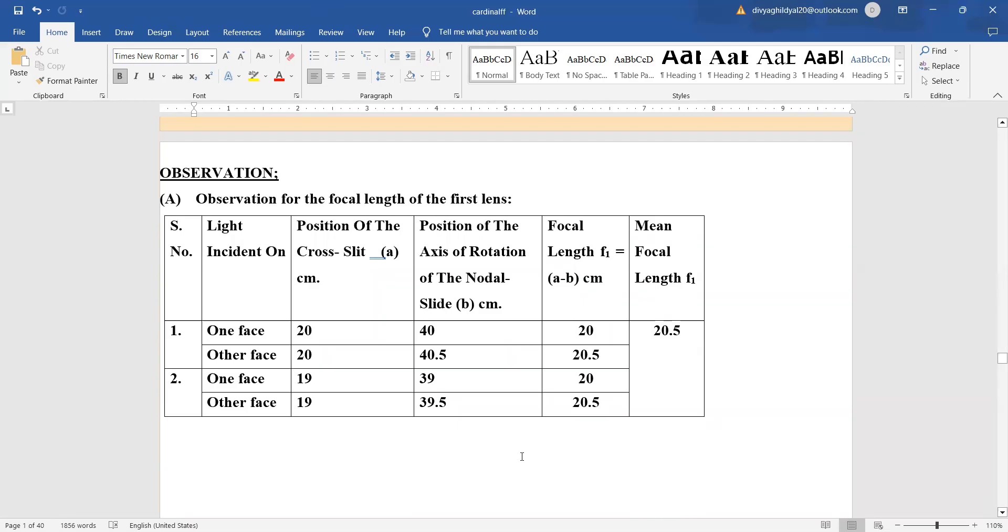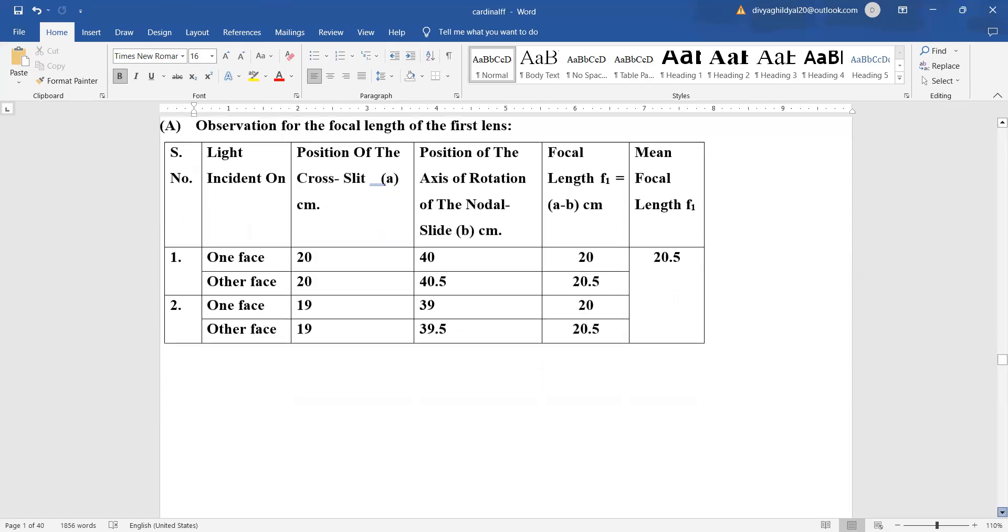The experiment consists of three observation tables. The first table is for the focal length of the first lens. The second observation table is for the focal length of the second lens. The third table is for the observation of focal length of combined lenses. In the first column, we have light incident on one face and other face of the lens, position of the cross slit, position of axis of rotation of the nodal slide. The difference between them gives the focal length, and we will find its mean value.